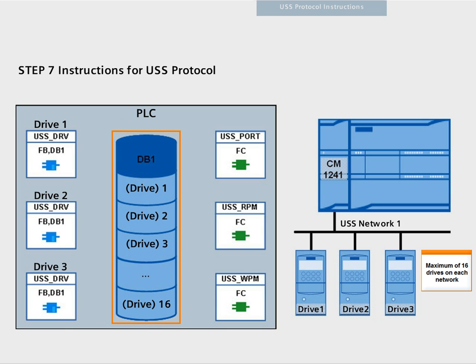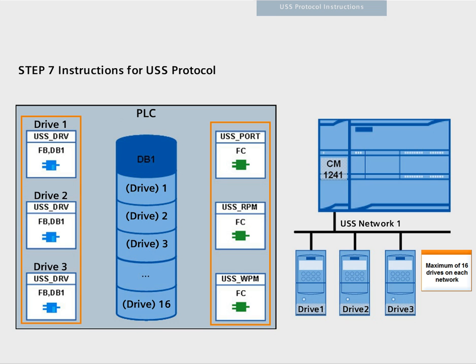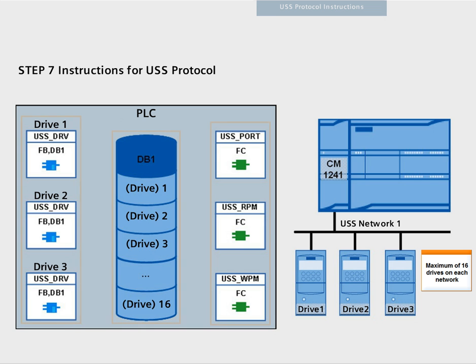You only need one joint instance data block for the temporary data storage of all drives connected to a communication module. The USS functions for these drives have joint access to the information in this data block. The drive function block provides access to a certain drive in the USS network from the user program.